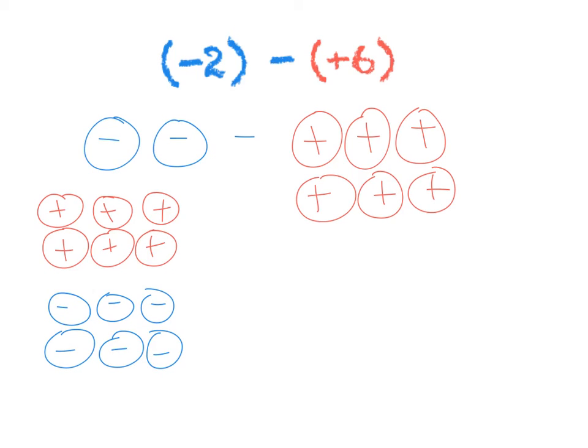And when I do the math and cross out the six red counters, six positive, subtract six positive, of course I'm left with zero positive counters. And I'm left with one, two, three, four, five, six, seven, eight negative counters for an answer of negative eight.